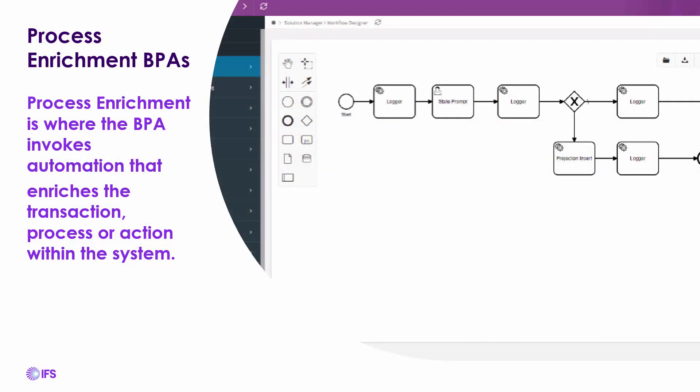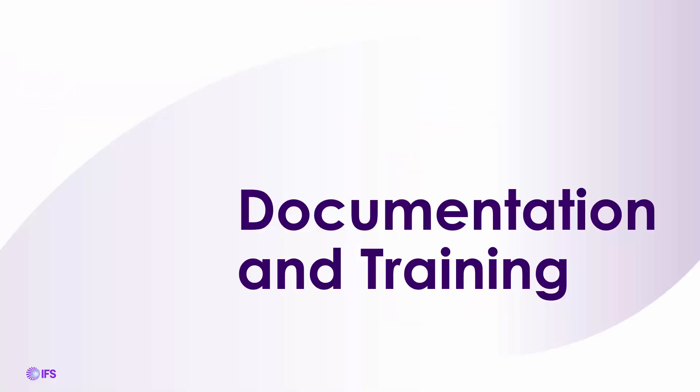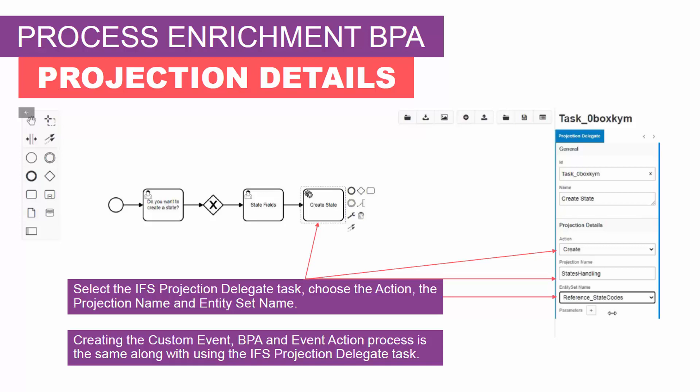Process enrichment BPAs are used where data is required to be altered, resulting in creating, updating, or deleting of data. Process enrichment is where the BPA invokes automation that enriches the transaction, process, or action within the system — for example, calling internal REST APIs or projection operations to create, read, update, or delete a record, and also updating a field within the table that invokes the BPA. In this example, we use the projection delegate task, choosing the action, projection name, and entity set, then create the event action to call this BPA.